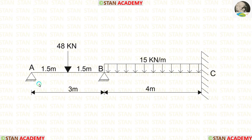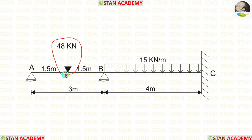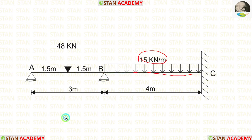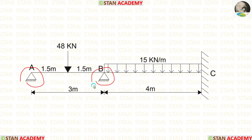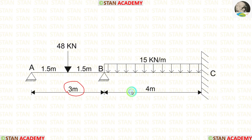In this beam, there are two spans: span AB and span BC. In span AB, there is a point load of 48 kN acting at the center. In span BC, there is a uniformly distributed load of 15 kN per meter acting for the full span. At points A and B, there are hinged supports, and at point C, there is a fixed support. Span AB is 3 meters long and span BC is 4 meters long.